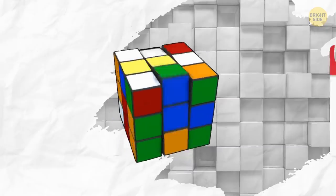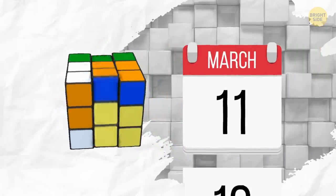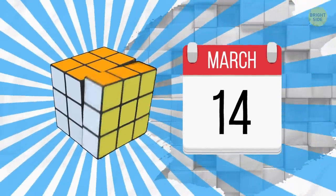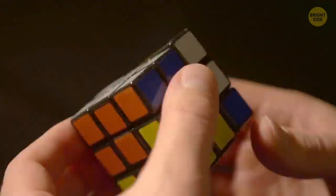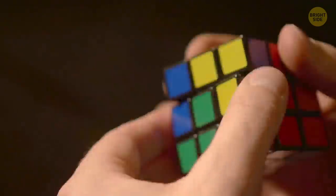The Rubik's cube creator, Erno Rubik, took one month to solve the cube after he created it. The world record is now 3.47 seconds.